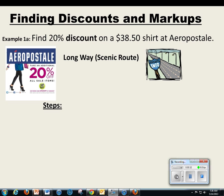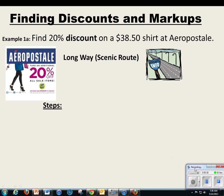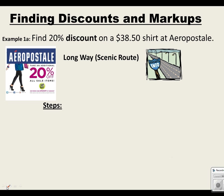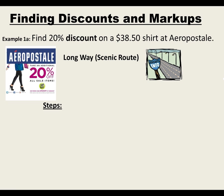One of the ways — I call it the long way, the scenic route — is to find the discount first. When you find the discount, you then take that away from the overall price, the original price. So let's find 20% of $38.50. To do that, you just do 0.20 times $38.50.